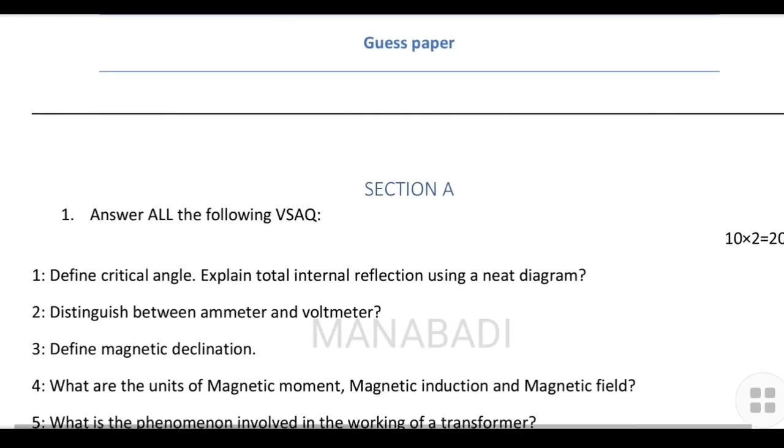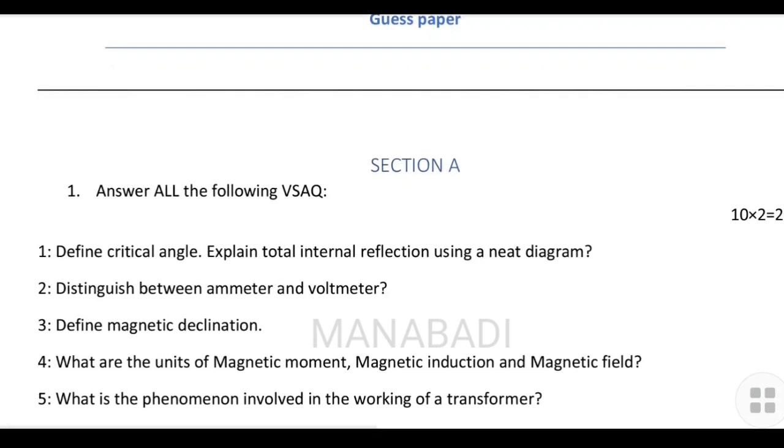First, in Section A, we have 10 questions and you must answer all 10 questions. Each question carries 2 marks. For each answer, you should maintain 3 to 4 lines. Write your answer clearly and maintain proper format. If you write the answer well, you'll get full marks.